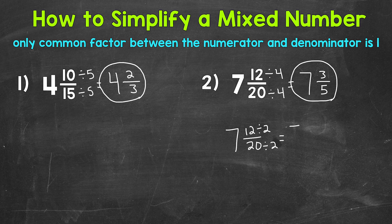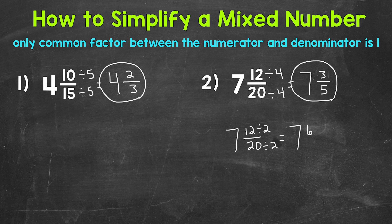So let's divide both of them by 2 and see what happens. This will give us 7 and, well, 12 divided by 2 is 6. 20 divided by 2 is 10. So we have 7 and 6 tenths, which is different than our 7 and 3 fifths. But we still have a common factor other than 1. 6 and 10 have a common factor of 2.